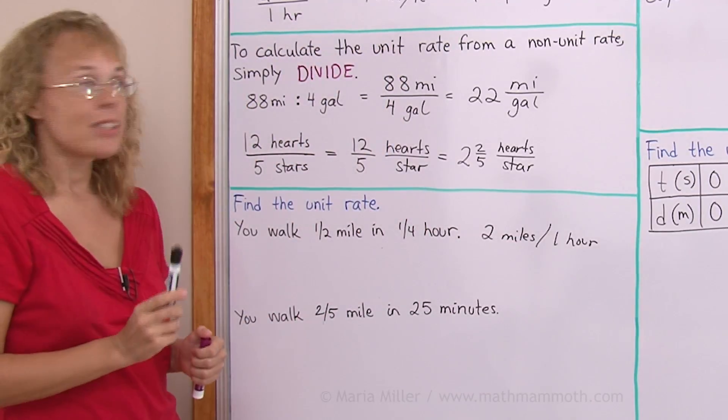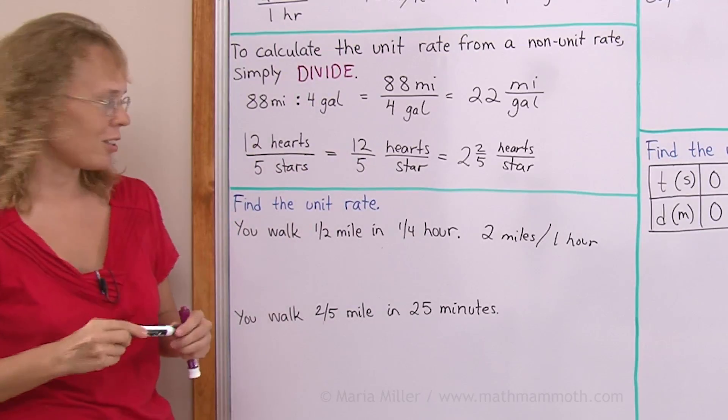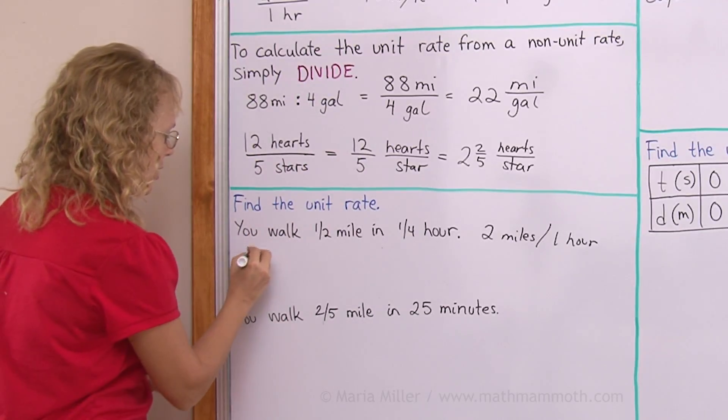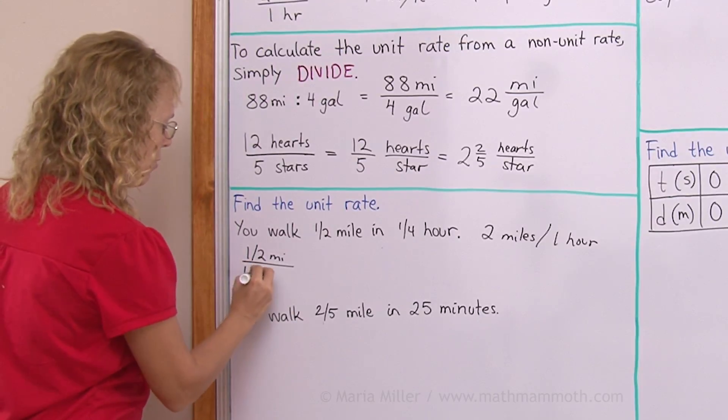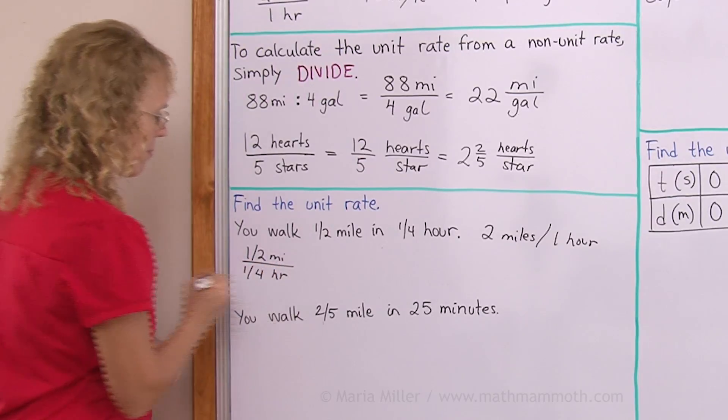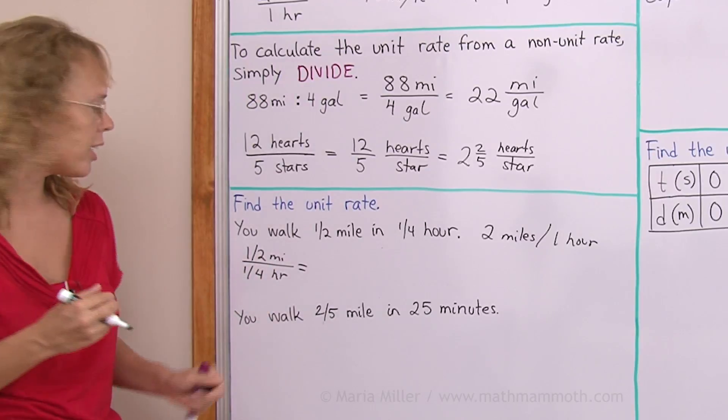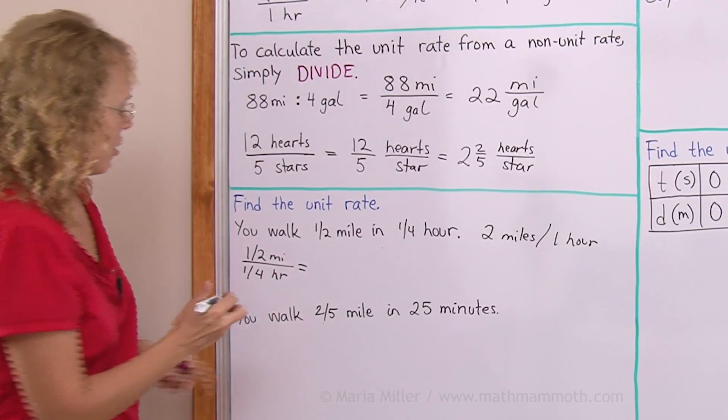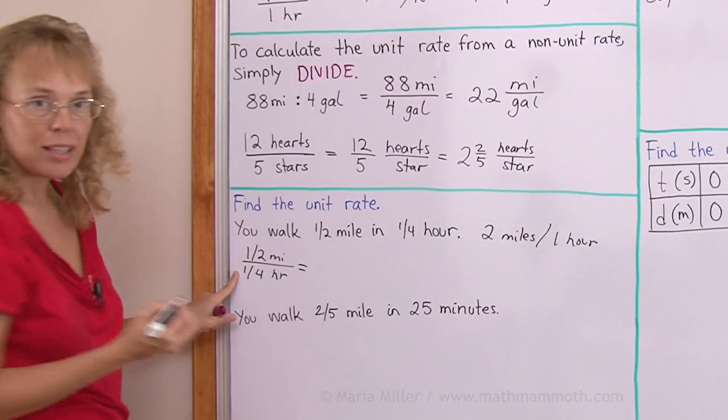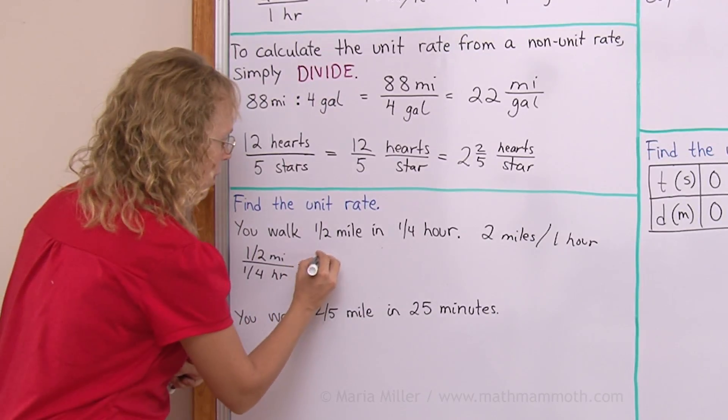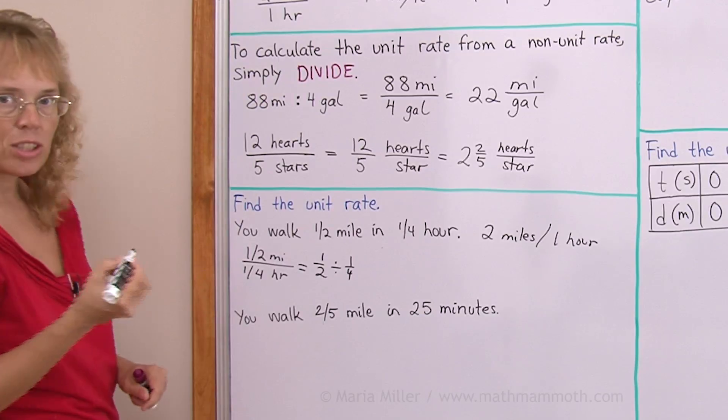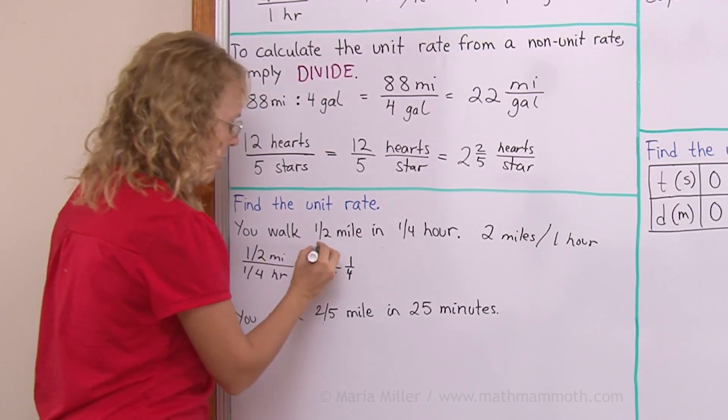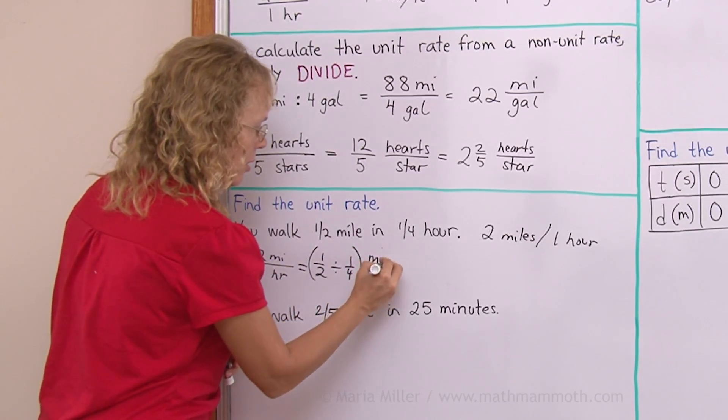But I want to also show you that the division still works. If I write it as half a mile per one fourth of an hour, I can still use division to find the unit rate. I just take one half divided by one fourth. One half divided by one fourth. And then that's going to be miles per hour. This many miles per hour.